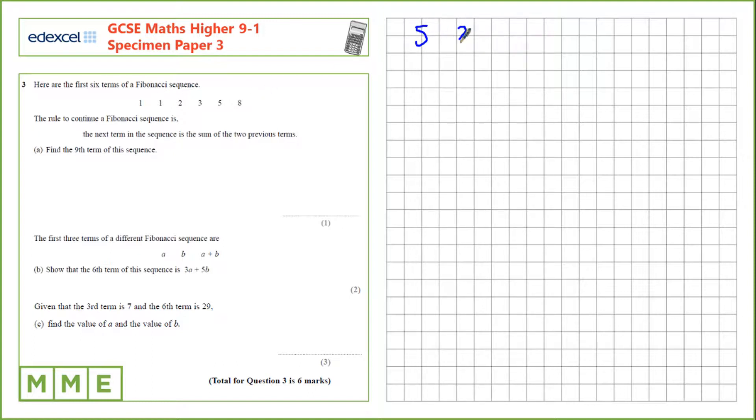We have 5, then 8, we need to add these two together to get 13. Then we add the two previous terms 8 and 13 to get 21, and 13 plus 21 is 34.